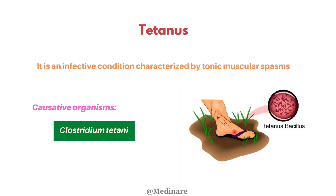Clostridium tetani is widely distributed in the soil and also in the intestine of humans and animals. It has been recovered from a wide variety of other sources including street and hospital dust, plaster of Paris, bandages, catgut, talc, wall plaster, clothing, and so on.